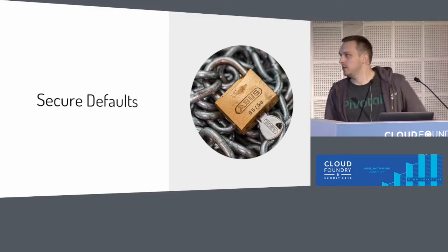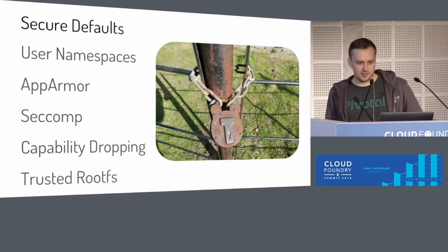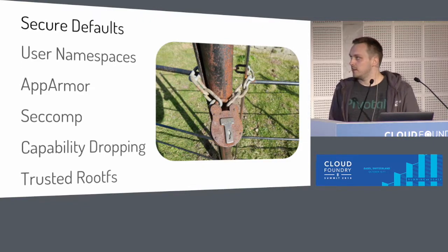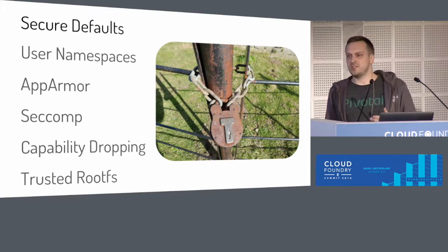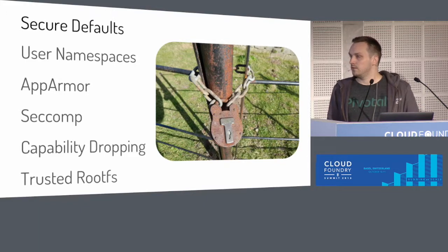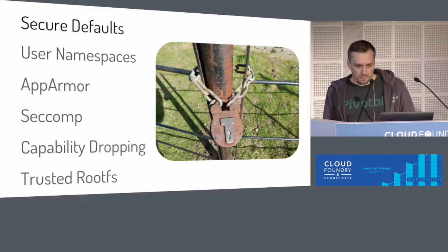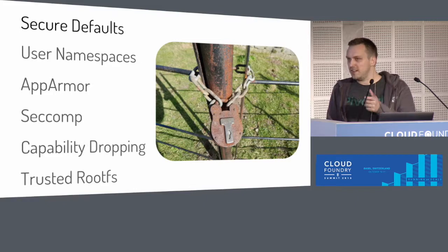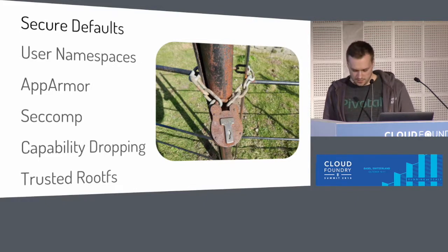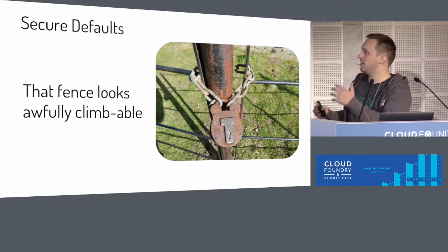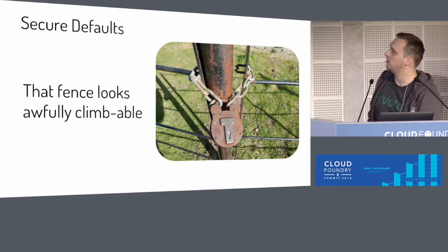Let's talk about secure defaults. We use RunC, and RunC lets you configure a container to add additional layers of security — things like user namespaces, AppArmor, seccomp, etc. But by default, RunC won't necessarily turn many of these things on for you. In Garden deployments in Cloud Foundry, we want to be as paranoid and as secure as possible — not using those features should be a conscious decision. So by default, Garden looks at this RunC configuration and turns on every single security feature we feasibly can. But there is a problem: we've secured the container with this big heavy padlock, but the thing around that container — the gate — has some pretty big gaps in it.